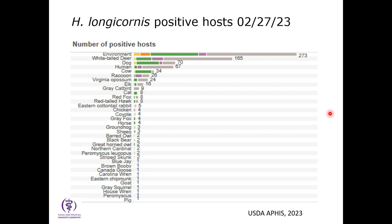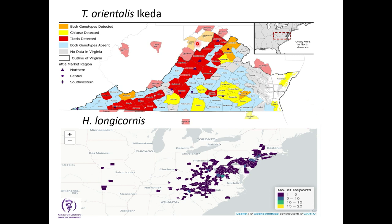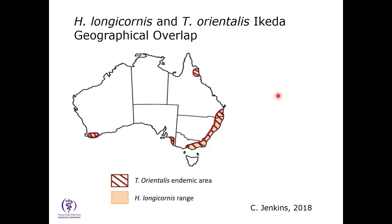Bringing back the Virginia map showing where Ikeda — the pathogenic Theileria — is found, and overlaying where the Asian longhorn tick has been found, they are very, very closely correlated. Similarly in Australia, the distribution of Theileria orientalis aligns very closely with where the tick is found. The Asian longhorn tick appears to be the key player in the presence and proliferation of this disease.